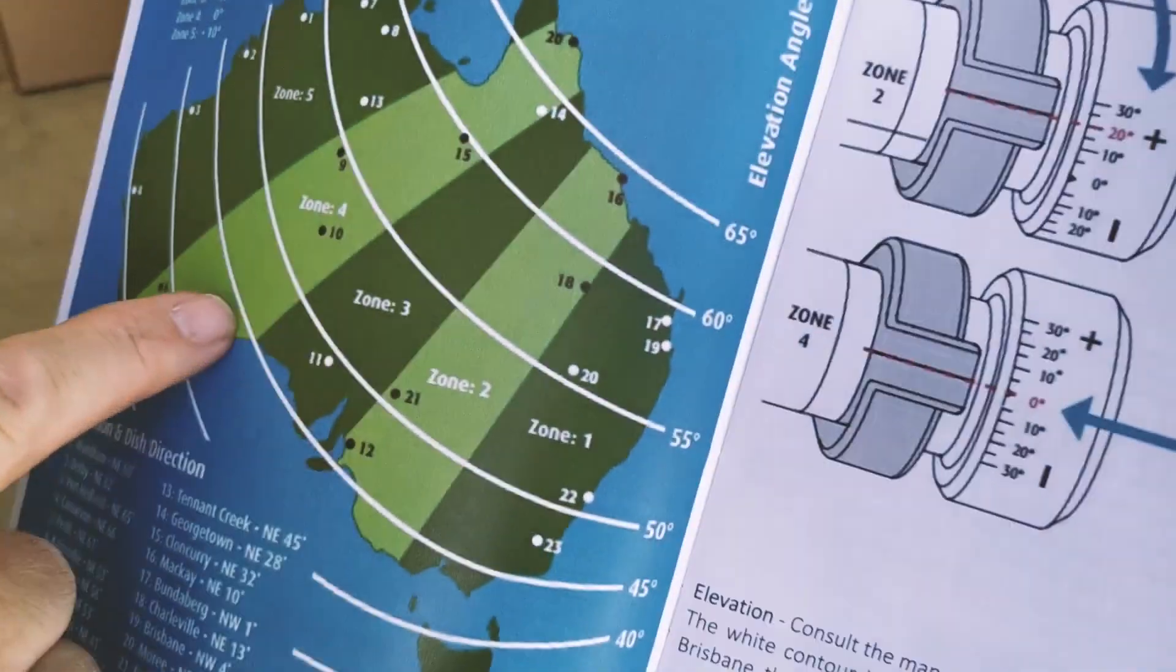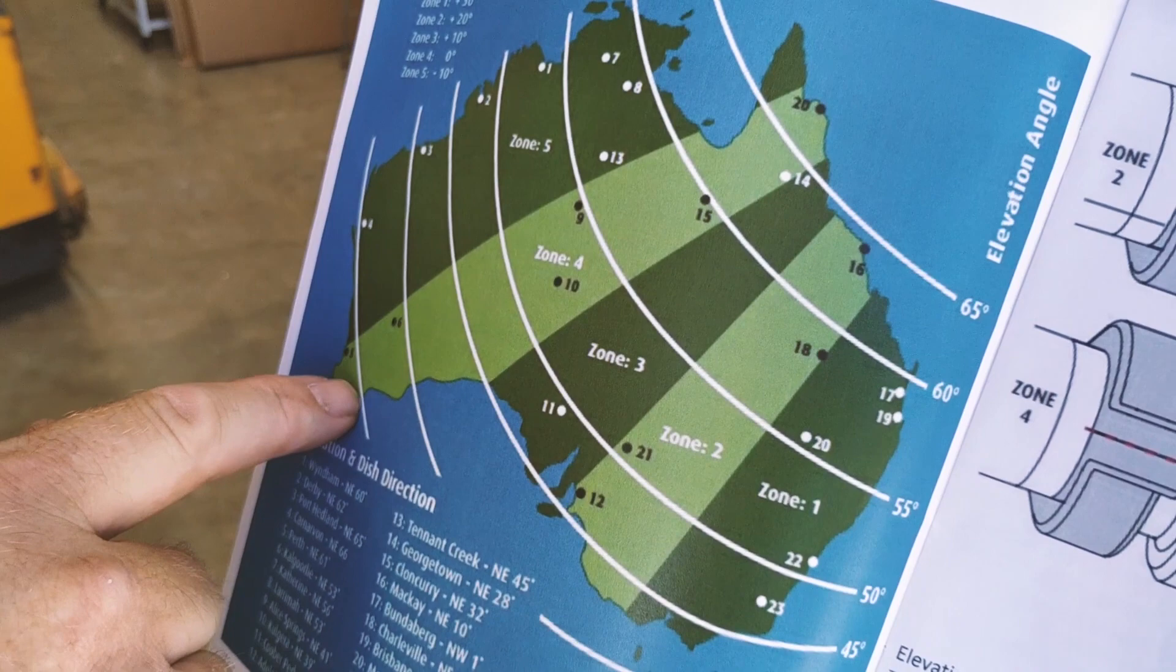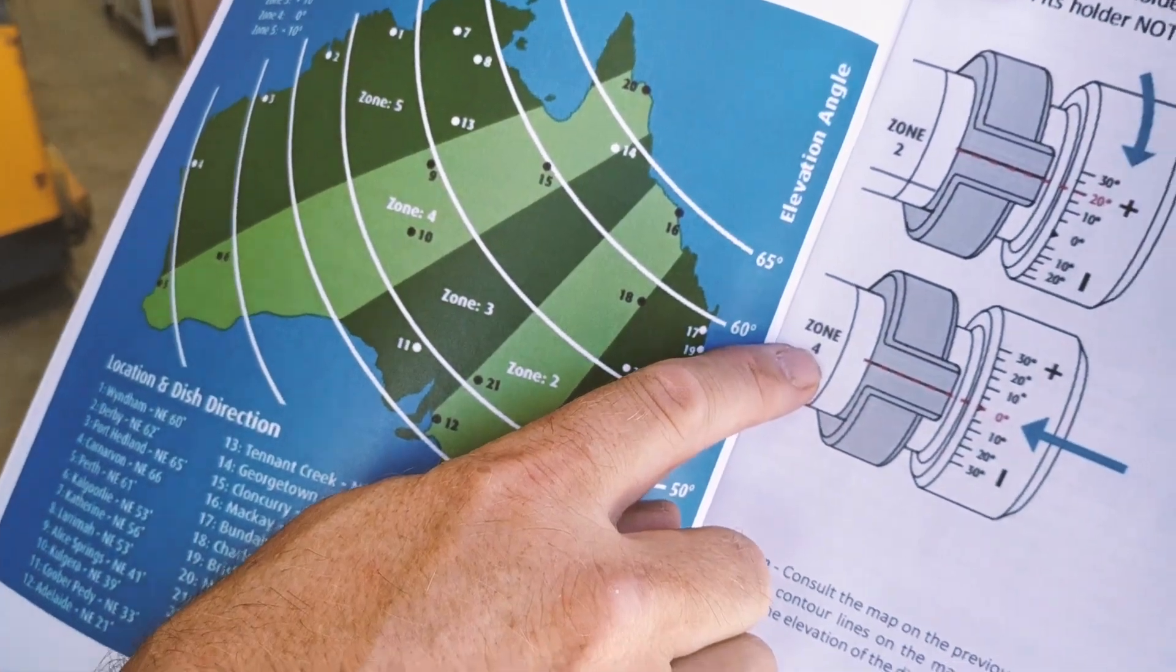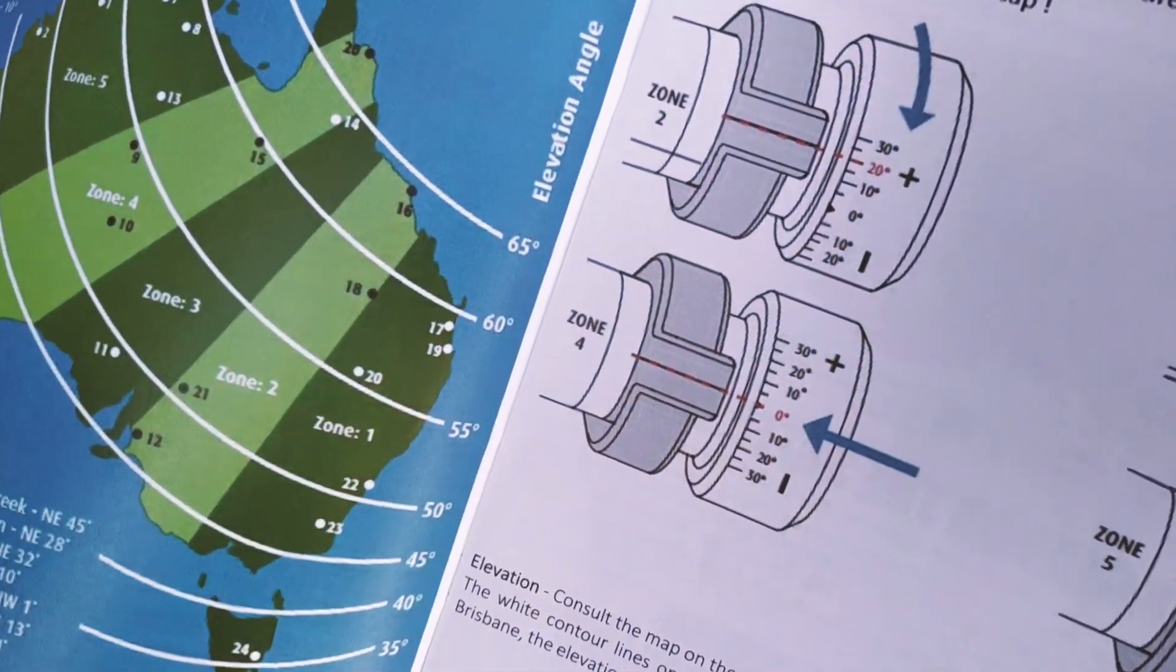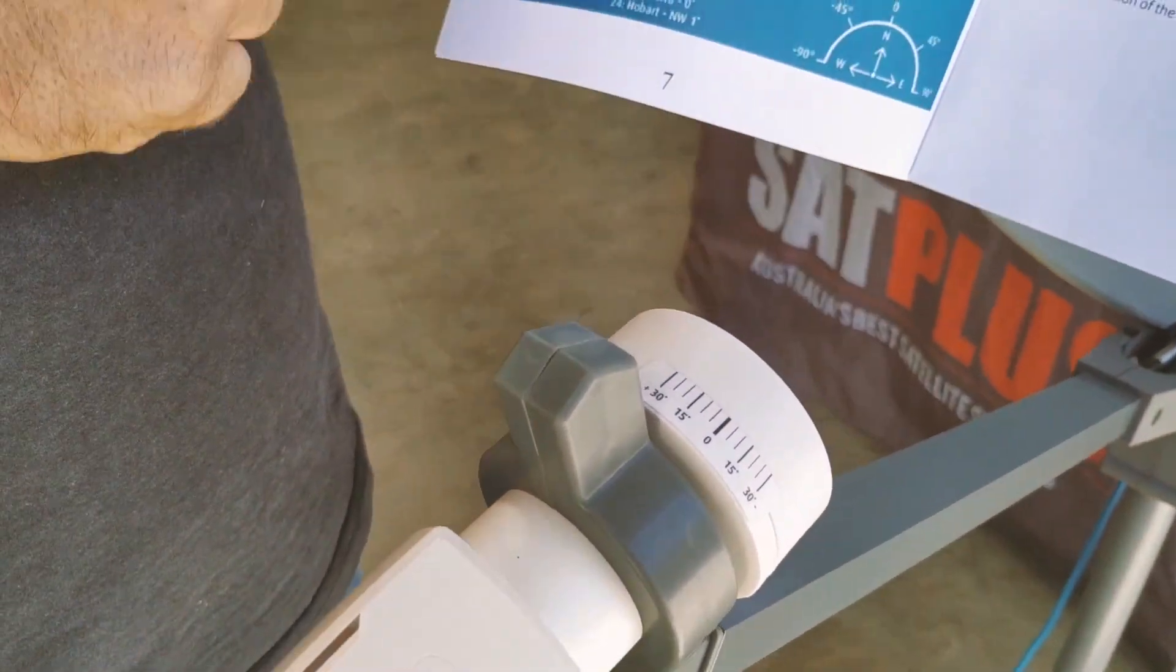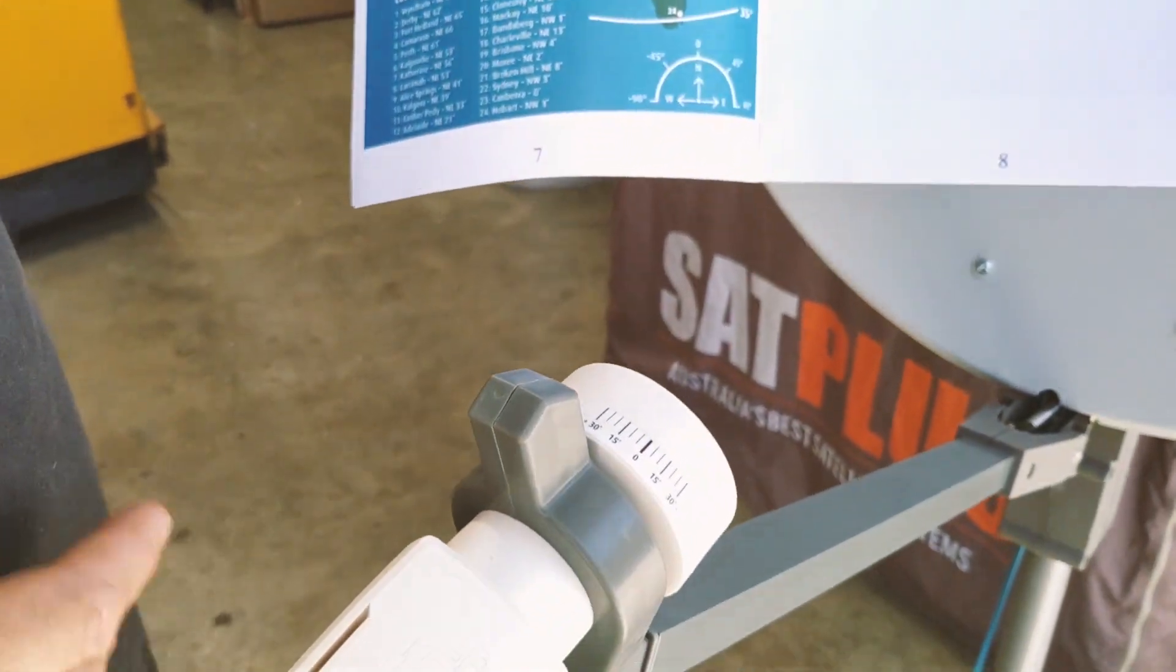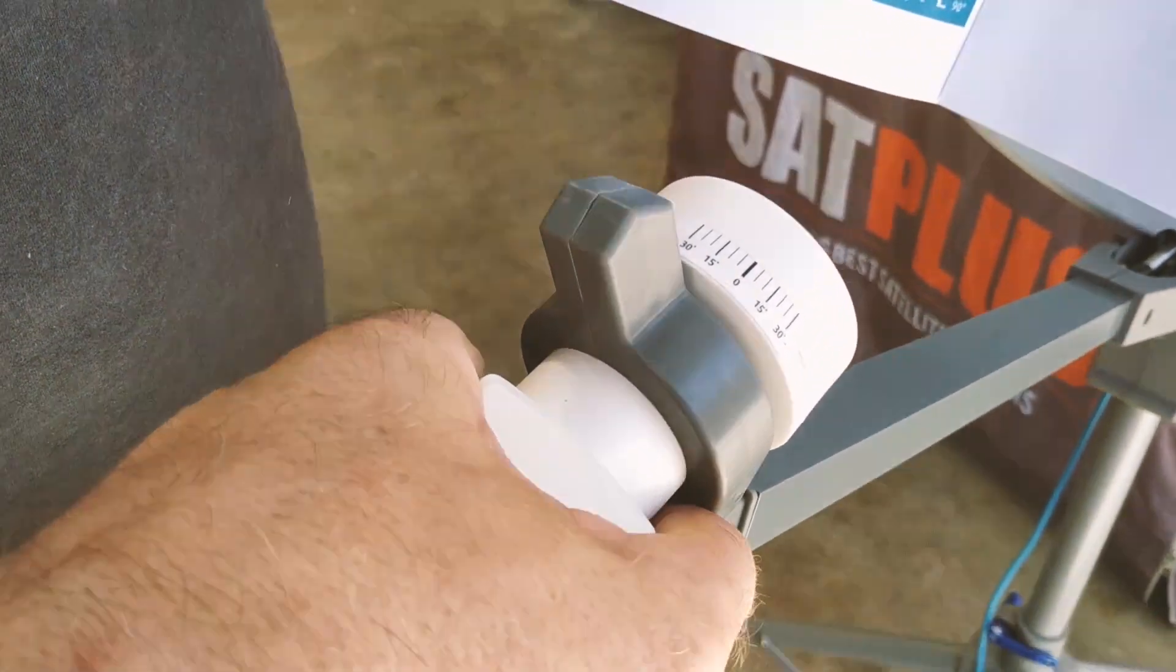If I travel across the Nullarbor across to Perth, I'm now in zone four. If we go to zone four, it tells me zero degrees. So if I shot across with this dish without touching the LNB and attempted to use it in Perth tomorrow, it will not work. I have to turn it to the zero position for zone four.